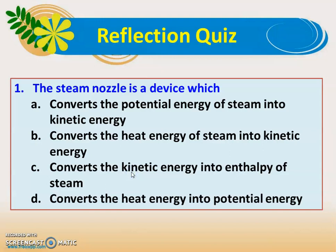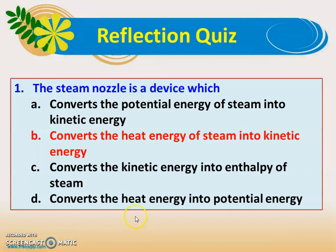Now we answer a few questions. First: a steam nozzle is a device which — option A: converts potential energy into kinetic energy, option B: converts heat energy of the steam into kinetic energy, option C: converts kinetic energy into enthalpy, option D: converts heat energy into potential energy. Option B is the correct answer: the steam nozzle converts the heat energy of the steam into kinetic energy.